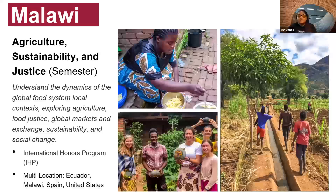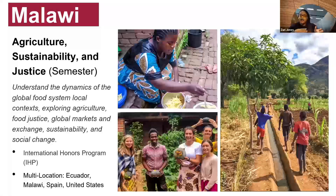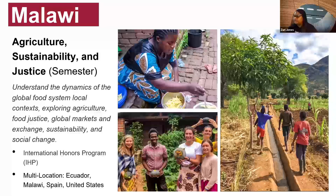There is also a very intensive program offered in Malawi run by SIT, called Agriculture, Sustainability, and Justice. It looks at global food systems across four locations: you start in the American South, then travel to Ecuador, then Malawi, and then Spain — physically following the global food system. It does offer honors credits. If you're interested in social justice or health justice, this is a great program to get a deeper look at how these different systems interact with each other.